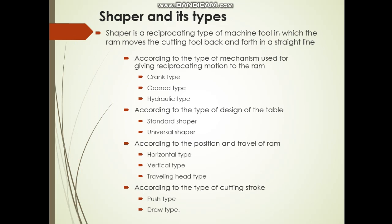We will convert the wheel to rotary power. This is the crank mechanism, which converts rotary motion from the motor. After that, there is also a gear type and a hydraulic type. We can see these in detail.